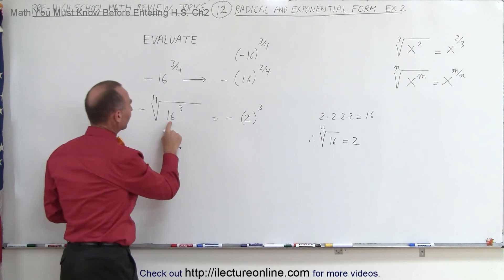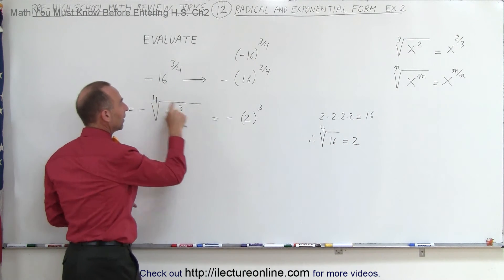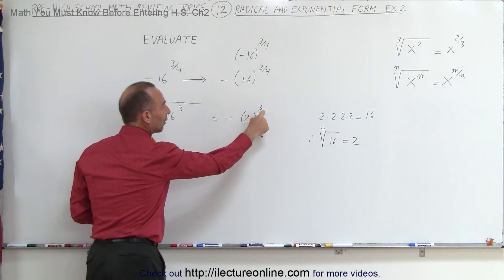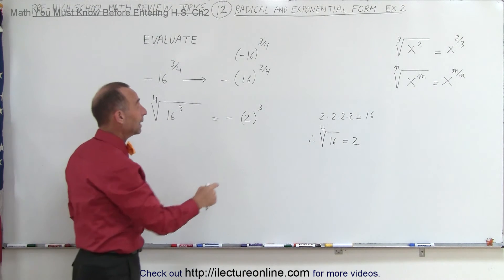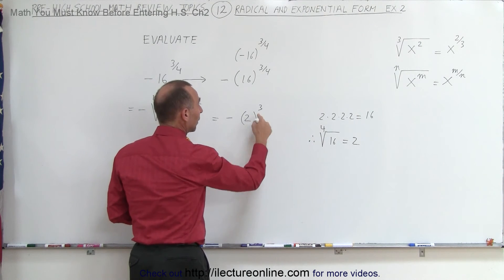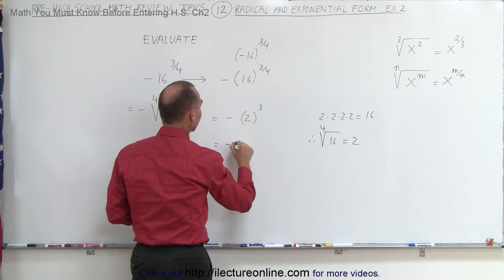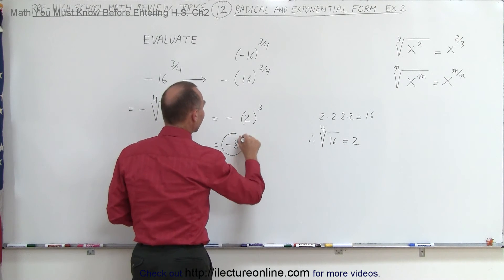So I took the number 16, took the fourth root of that, made it into number 2, and now I'm raising it to the 3rd power. Now we can go ahead and take 2 to the 3rd power, which is 8. So this is equal to minus 8, and that's the final answer.